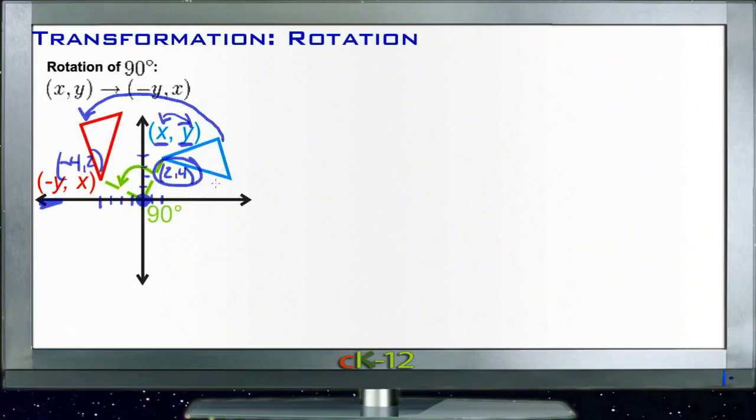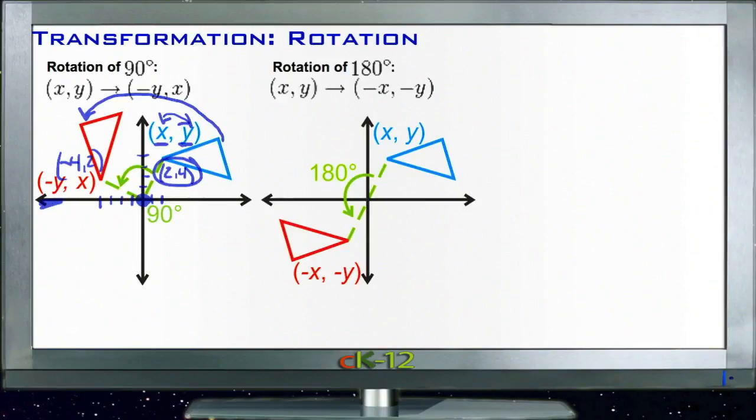If I'm rotating a figure by 180°, it's even easier. I keep my values in the same order; X and Y still stay X and Y. I just make them both negative. So if this point here were at (2,4), then after I rotated it, that same point, the tip, would be at (-2,-4). And that's nice, so it's really easy to rotate something 180°.